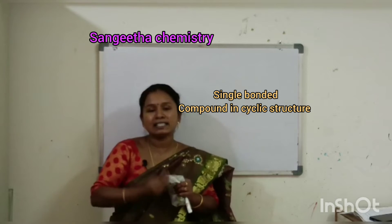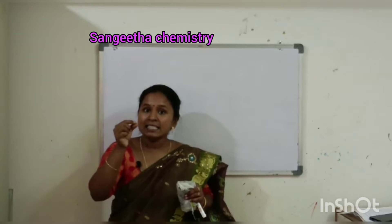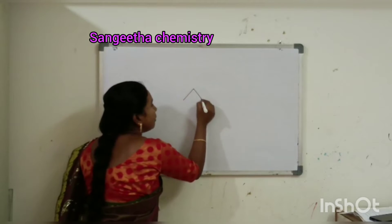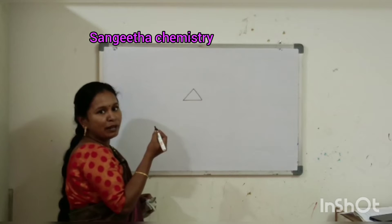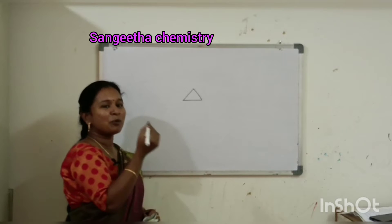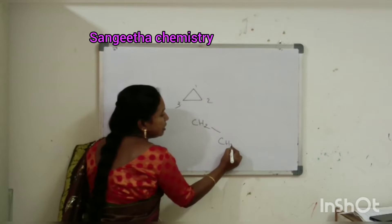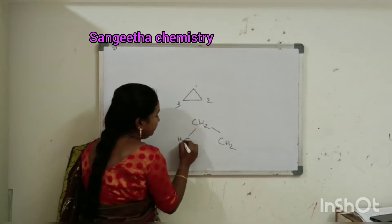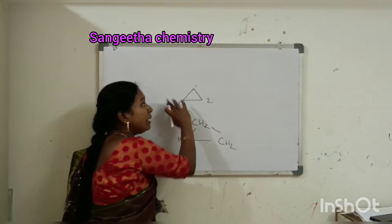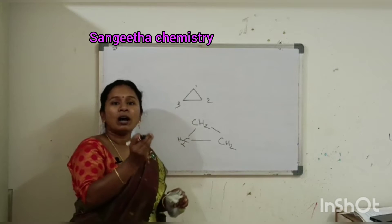So how will you define a cycloalkane? Cycloalkanes are compounds which are single bonded, but they will be in a cyclic form. For example, cyclopropane — one, two, three carbons — the structure is CH2, CH2, CH2. This is cyclopropane. They are single bonded, present in a cyclic ring, so they are called cycloalkanes.